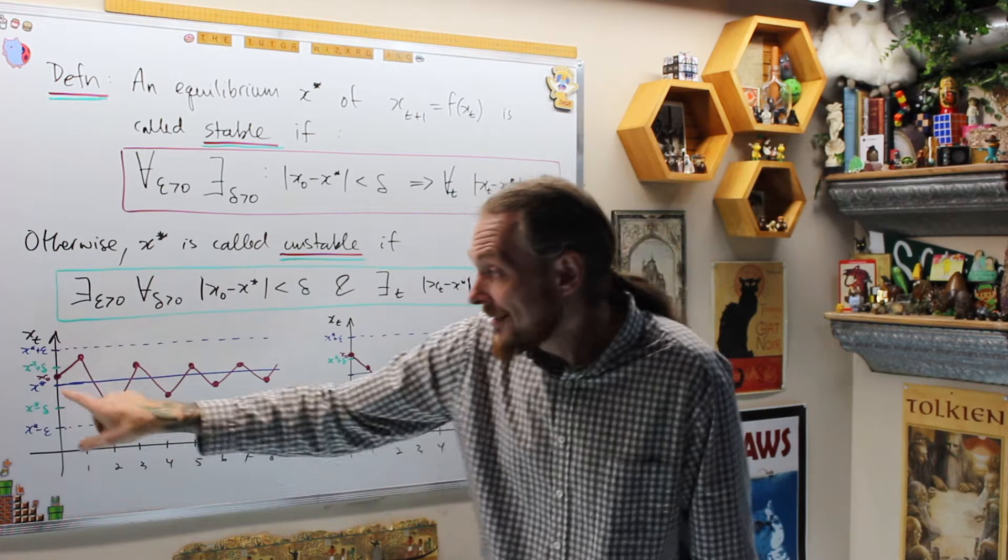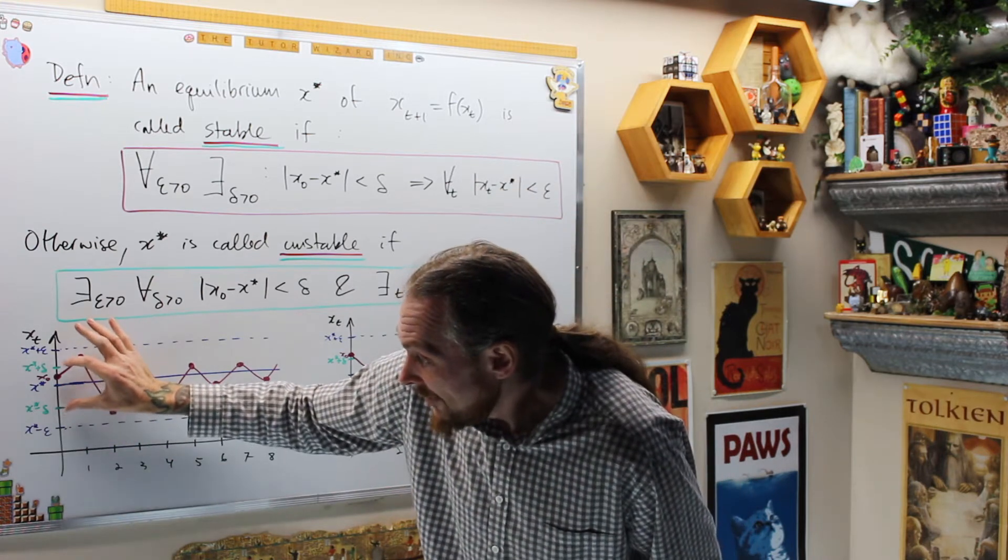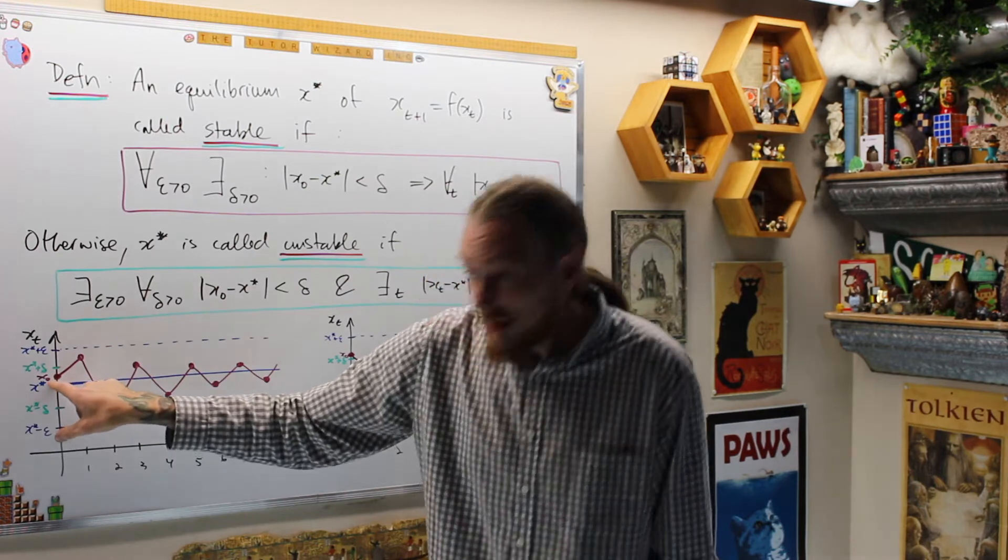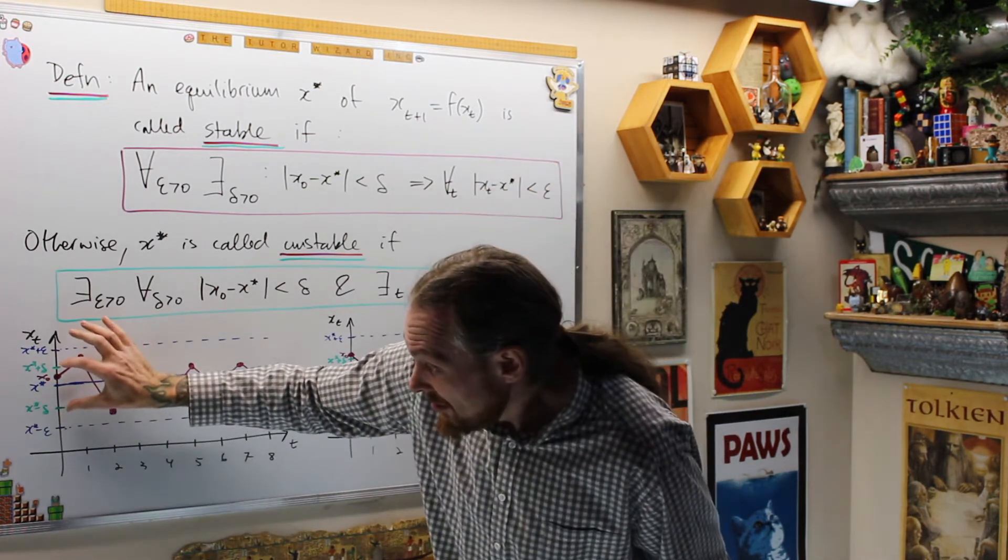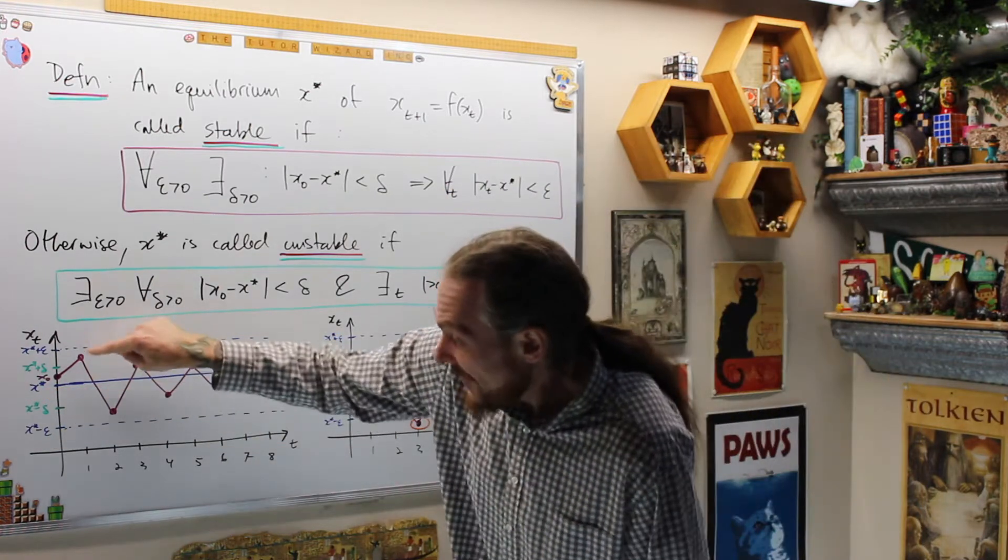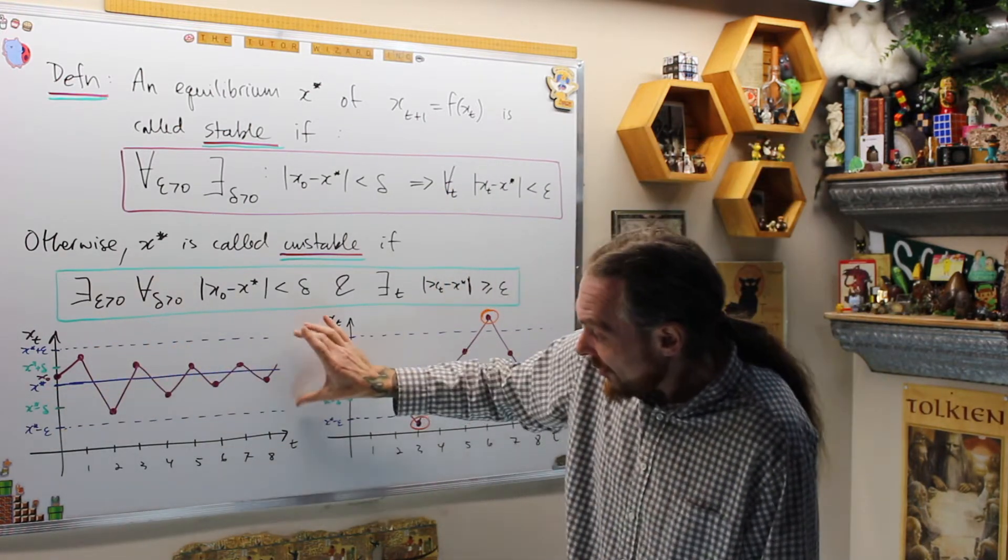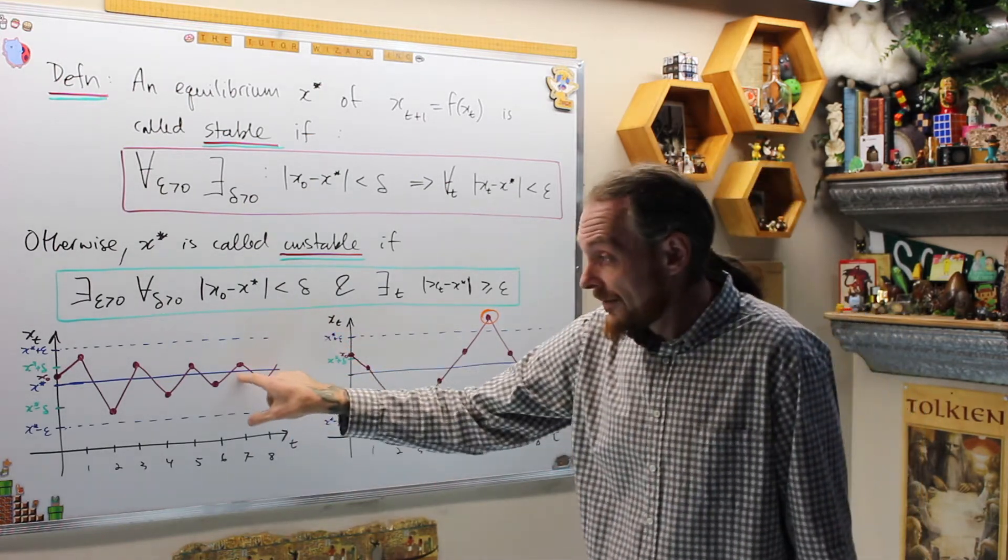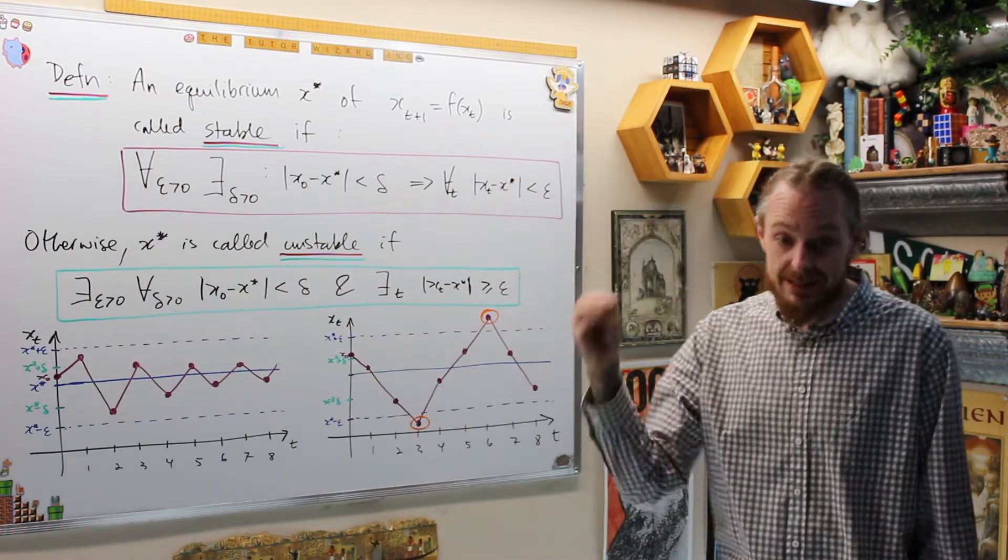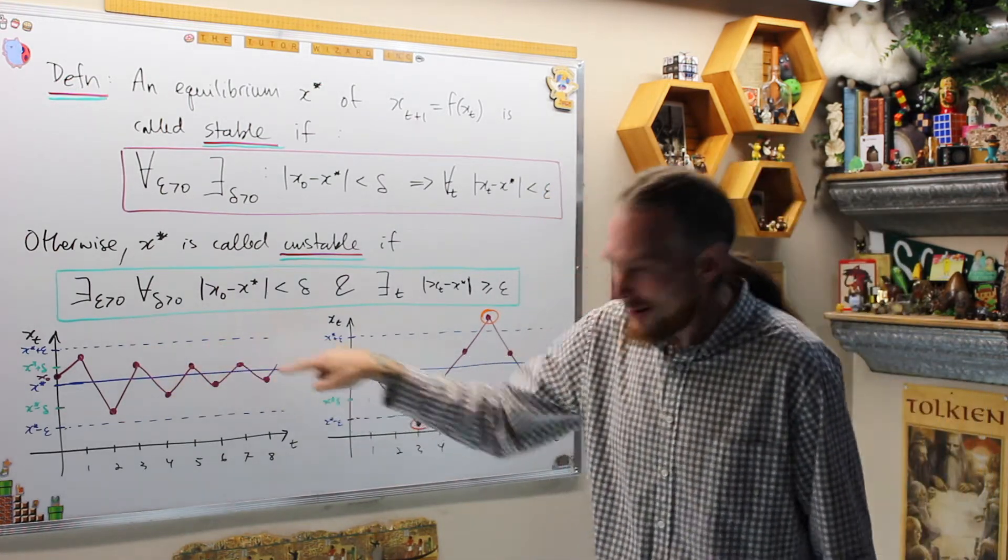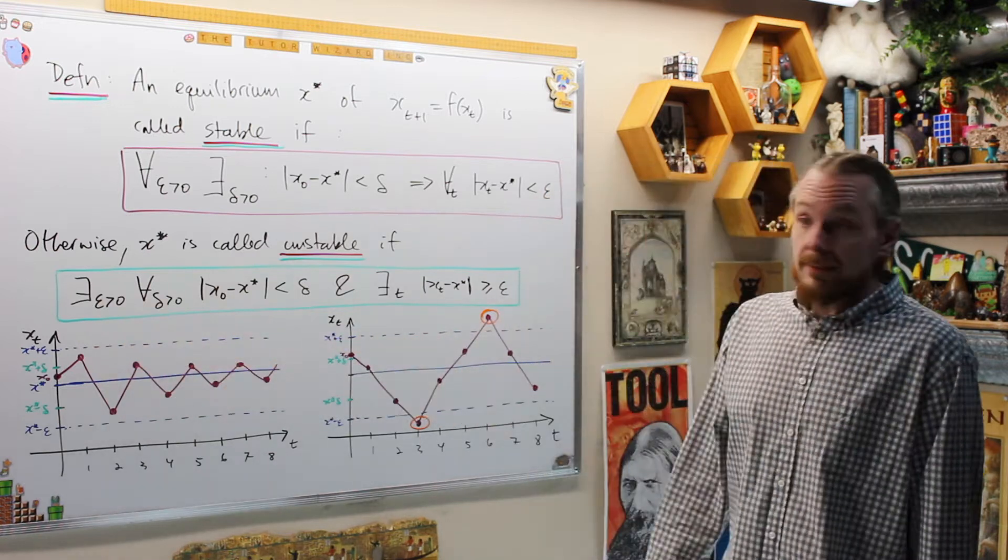Pictorially, what that's going to say is, as long as I start within the interval x* plus delta, x* minus delta, as long as my starting point x_0 is in that interval, close enough to my equilibrium, then all of the values over time are going to be within this interval, within an epsilon distance of the equilibrium. This is what we mean by stable. It's going to stay relatively close. It might even oscillate back and forth, up and down, but it's going to, over time, stay closer to it.